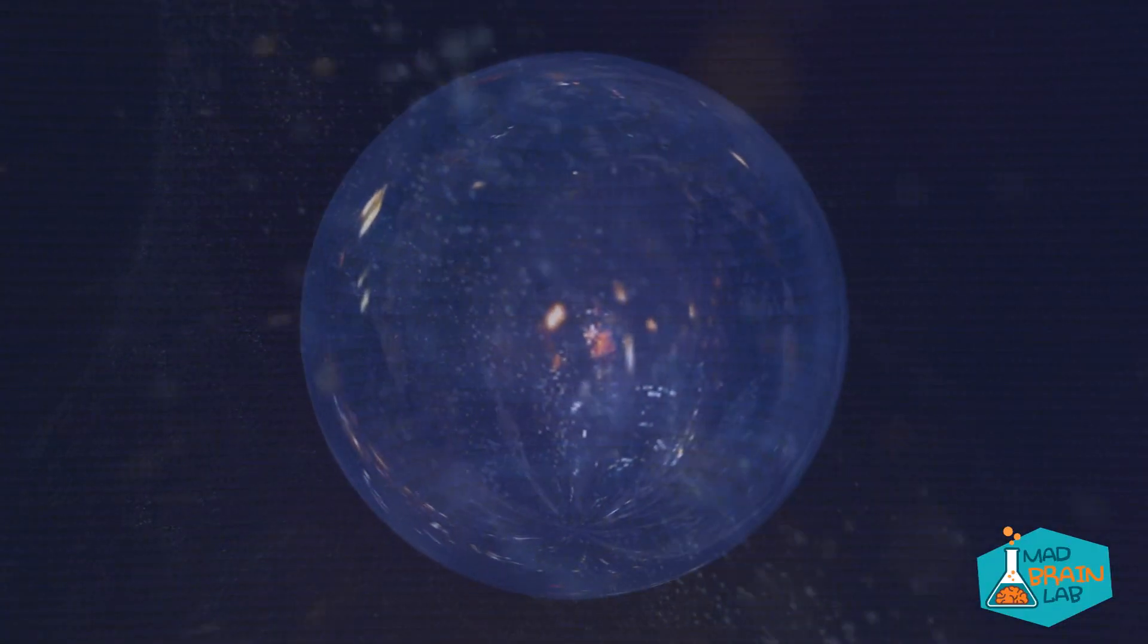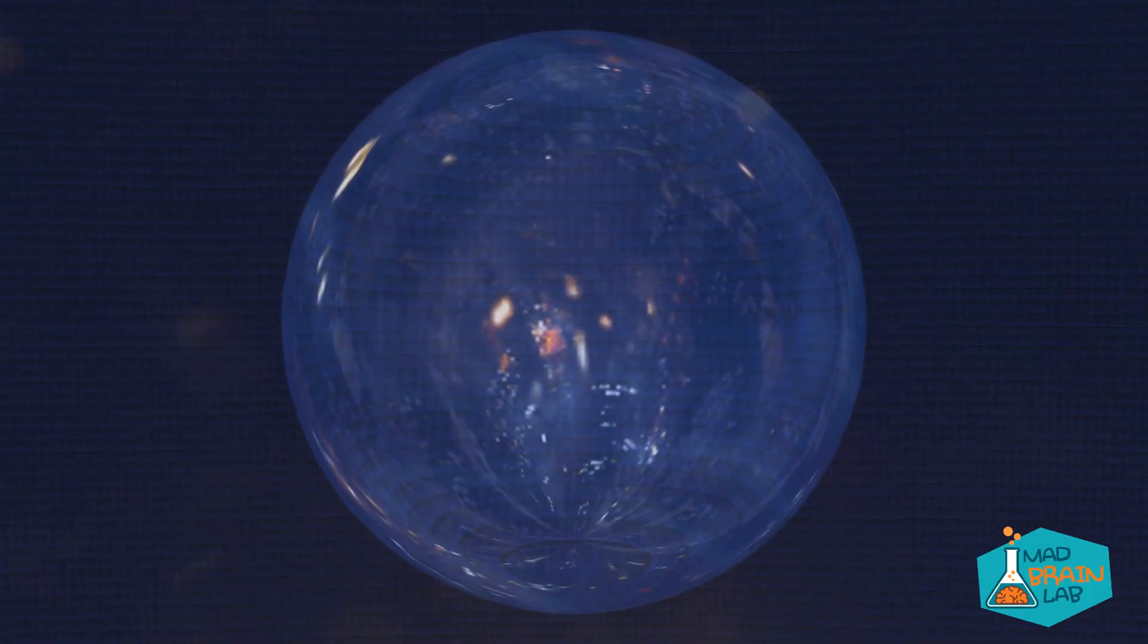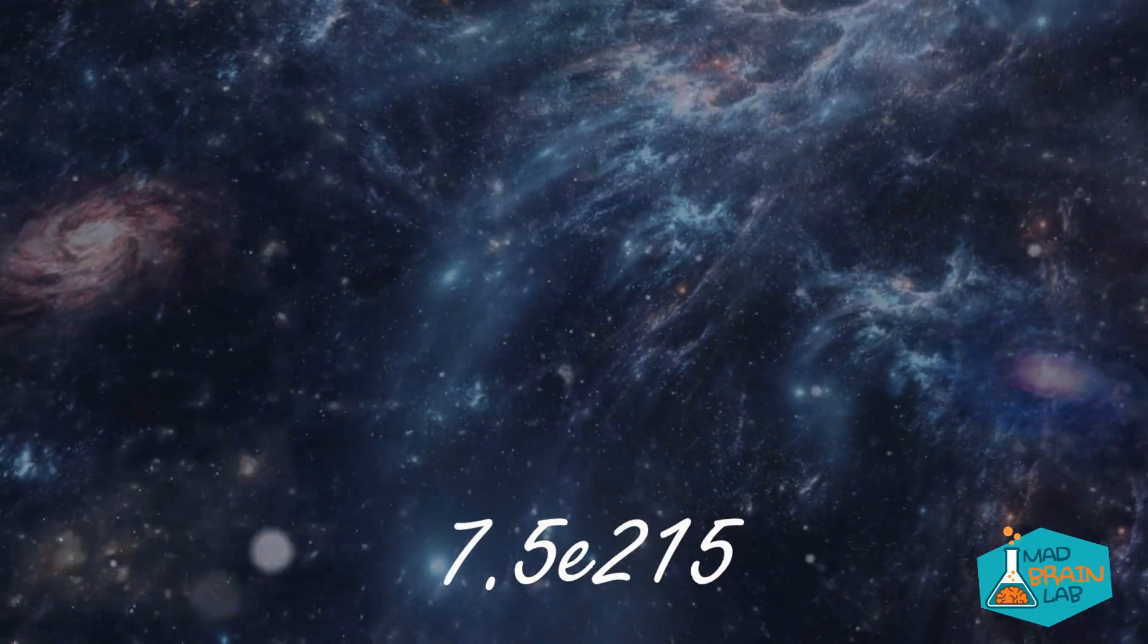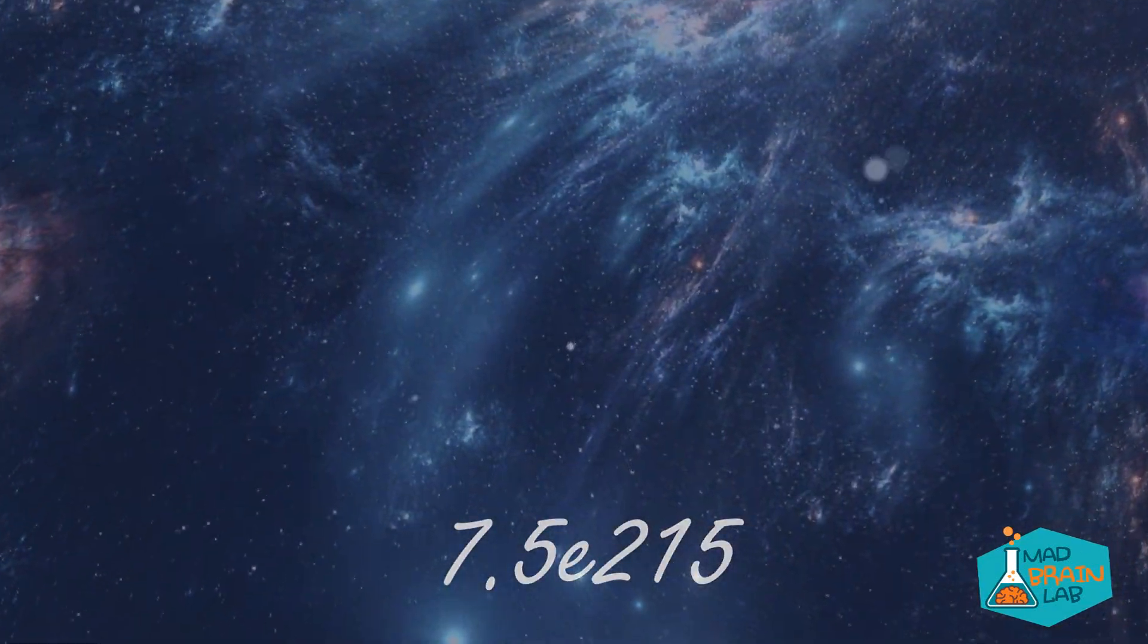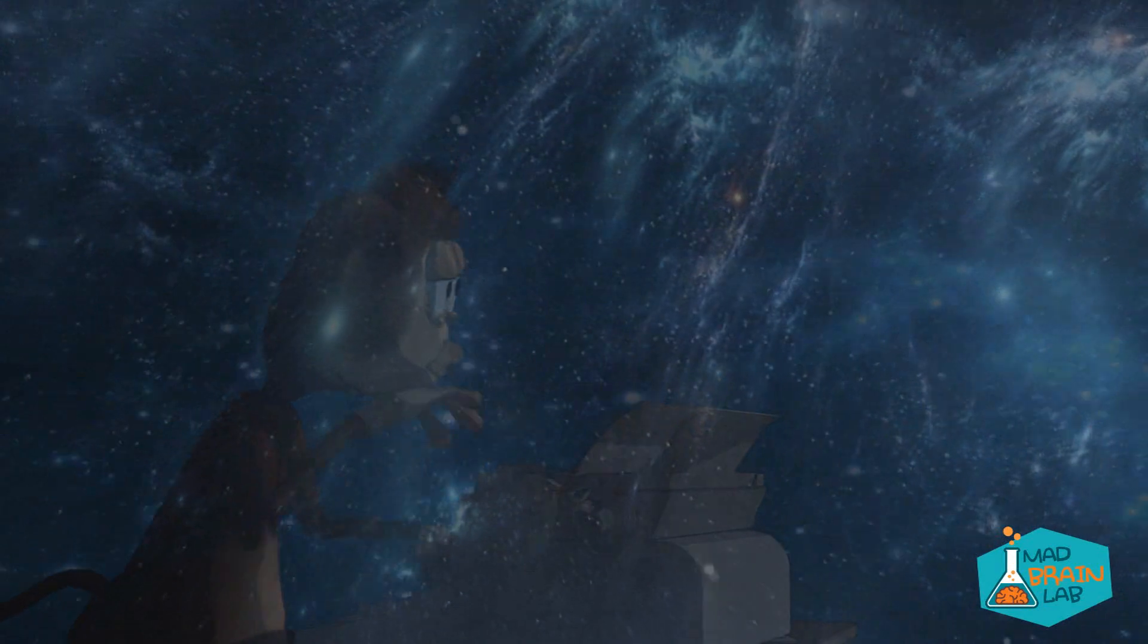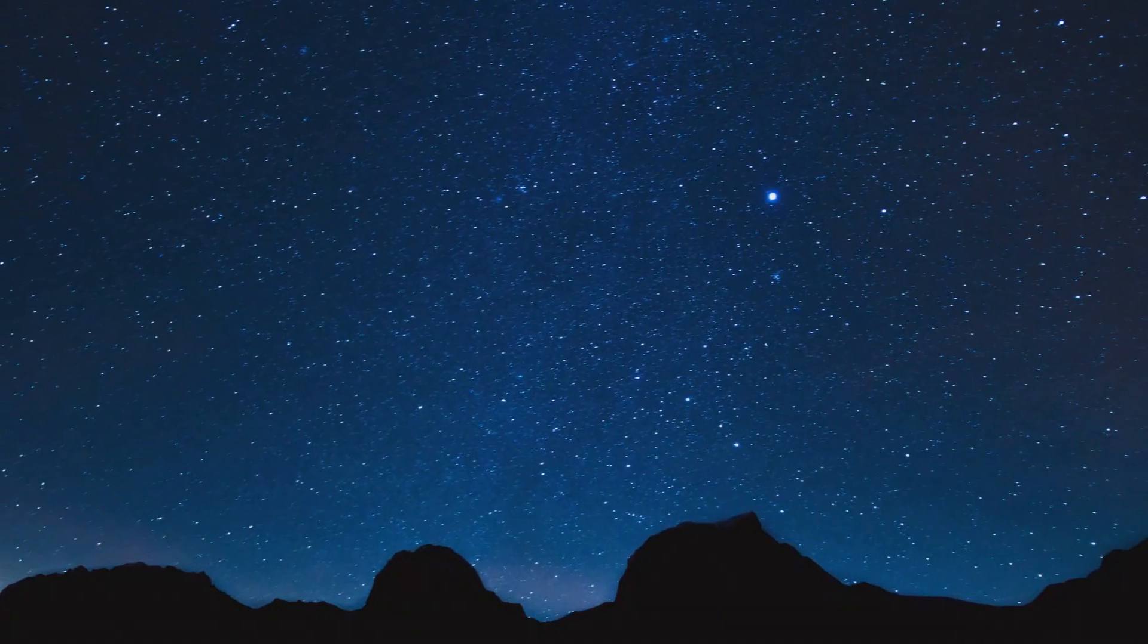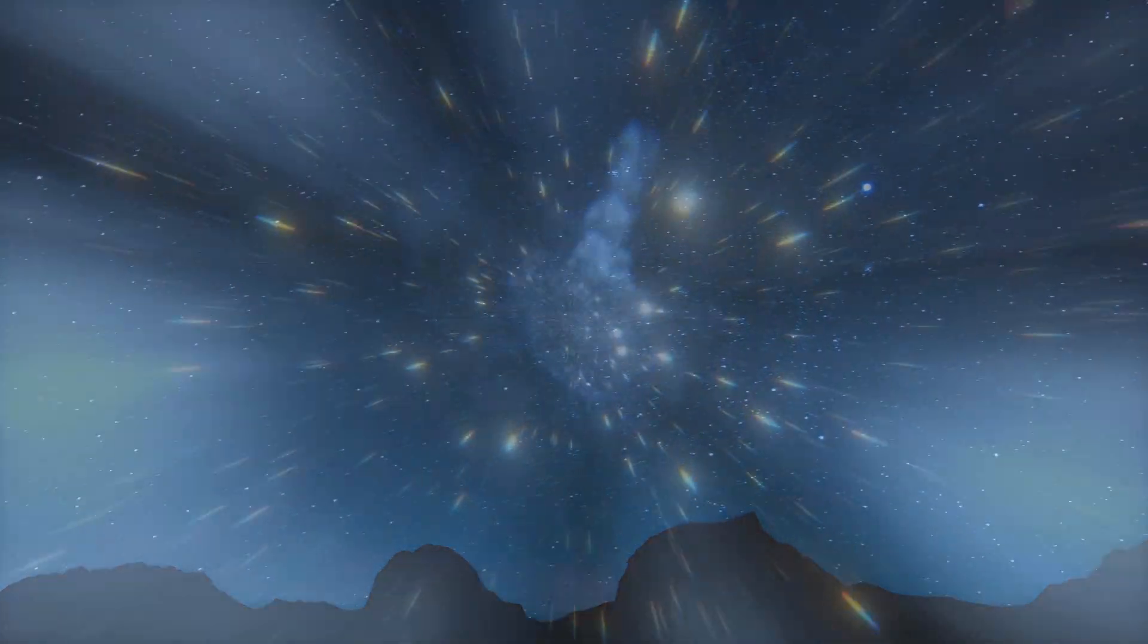Now, let's take the monkey multiverse and let each monkey clone itself by the amount of atoms in the observable universe. And after all of that monkey cloning, we have 7.5 to the power 215 monkeys. And if we compare this to the amount of monkeys that we require to write the complete works of Shakespeare, we get a number that is so small that it is effectively zero on most scientific calculators. We used absolutely mind-blowing numbers and we still don't even have a fraction of the amount of monkeys that we require to write the works of Shakespeare.